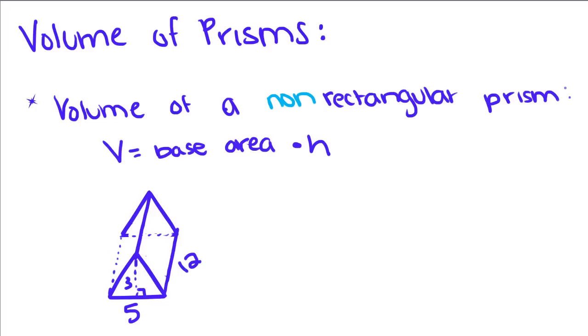A volume of a non-rectangular prism is its base area times its height. So for this triangle, it would be one-half base times height because that would be the area of this space right here times the height of the prism.